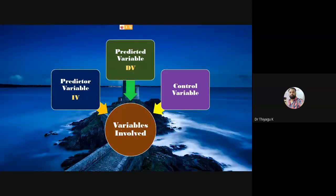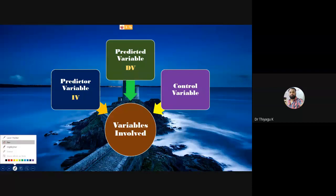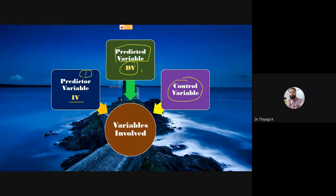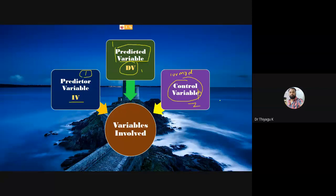For doing a partial correlation, we need at least one independent variable (predictor variable), one dependent variable, and one or more controlled (confounding) variables. So the condition is: one independent variable, one dependent variable, and one or more confounding variables. The predictor may be one or more. This is the condition for using partial correlation.